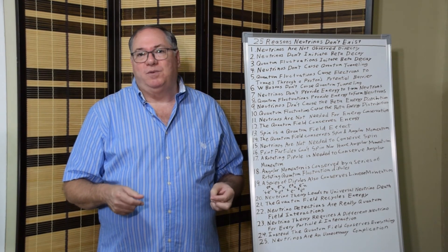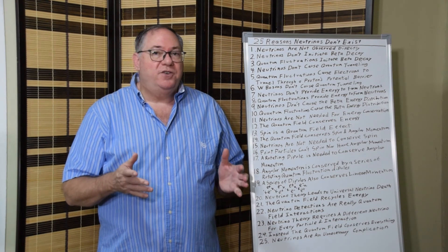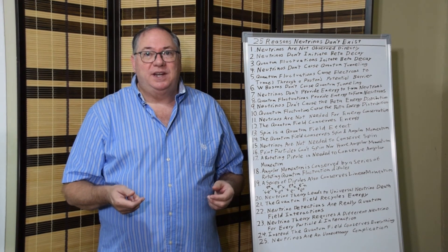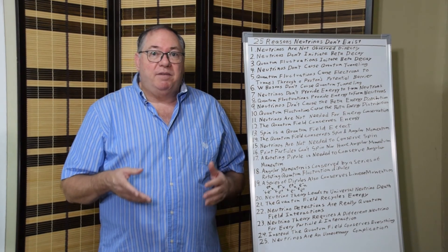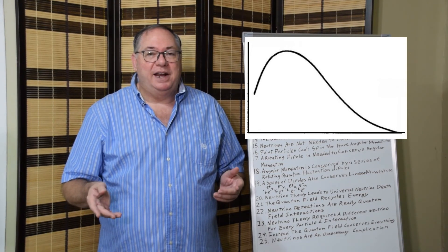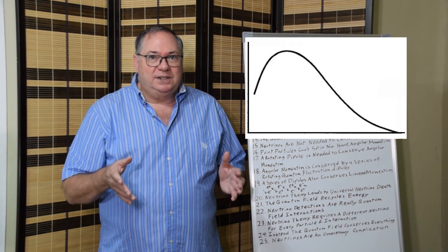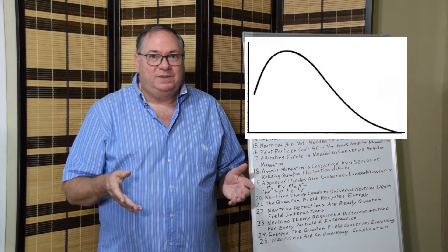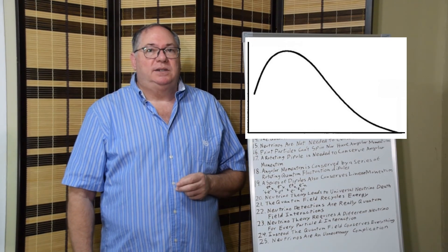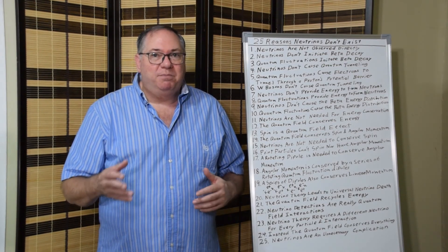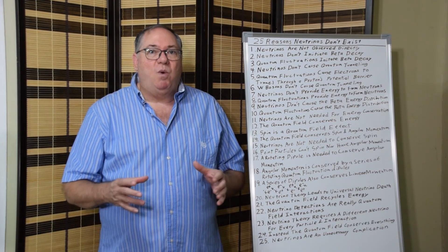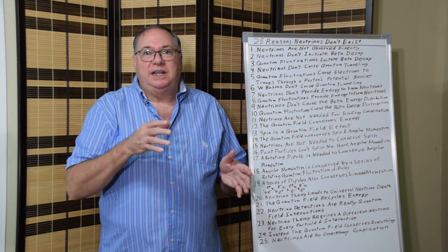Seven, neutrinos don't provide energy to form neutrons. That energy has to come from somewhere — it comes from the quantum fluctuation, at the beginning. Ten, quantum fluctuations cause the decay energy distribution. If you look at that curve, you get a smooth distribution that looks like black body radiation. The reason it looks like black body radiation is it's due to statistical interaction probabilities between quantum fluctuations and the particles. Quantum fluctuations provide some energy, and the energy that's left is carried away by the beta.